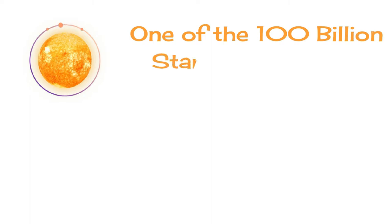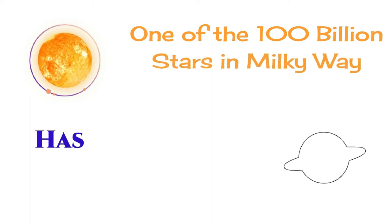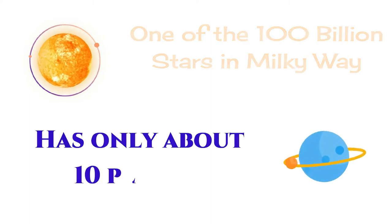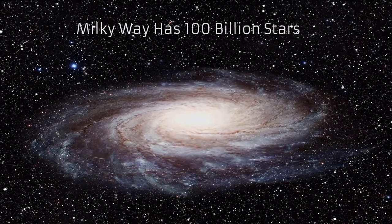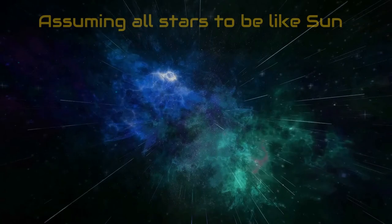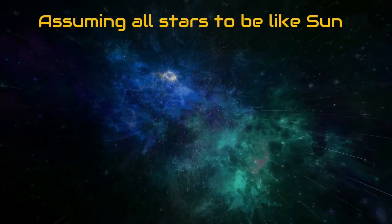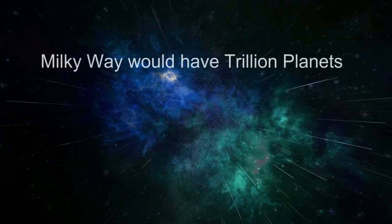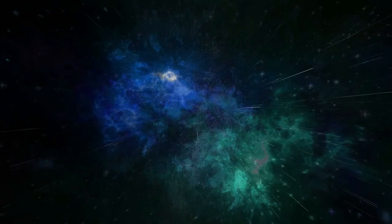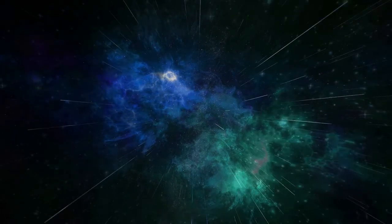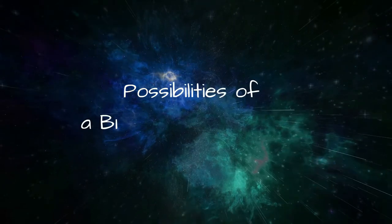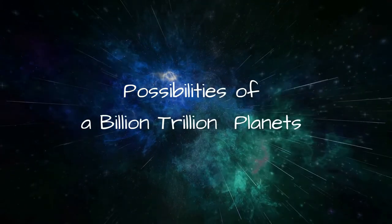First, let's do some crude maths. Our Sun, which is one of the hundred billion stars in the Milky Way galaxy, harbors in round figures ten planets. The Milky Way has a hundred billion stars. Assuming all those stars to be like the Sun, we'd expect a trillion planets in the Milky Way galaxy itself. And since there are a hundred billion such galaxies in the Universe, the total number of possible planets is about a billion trillion.